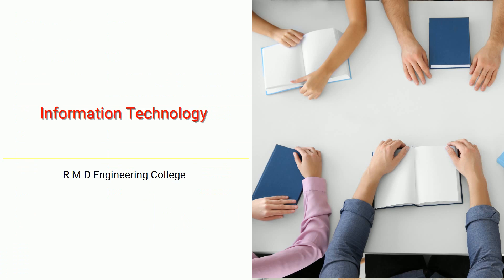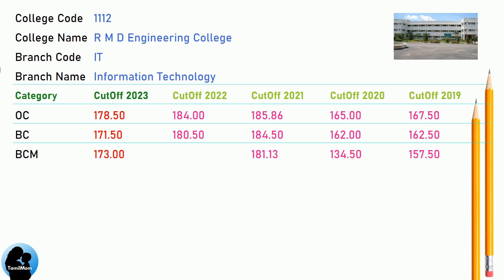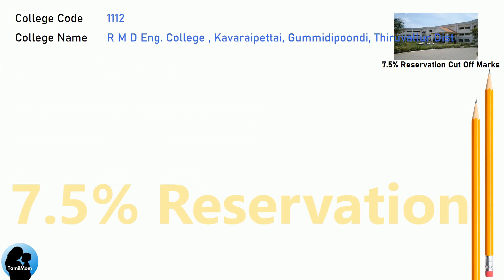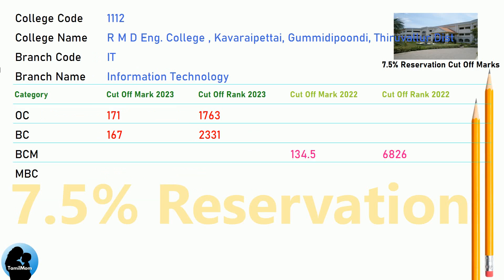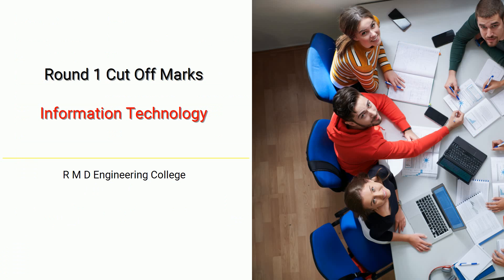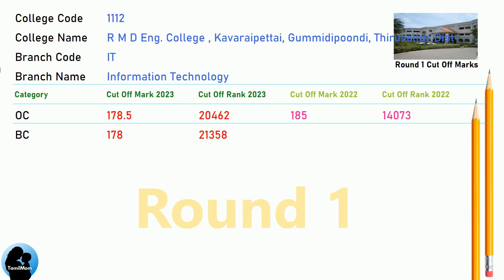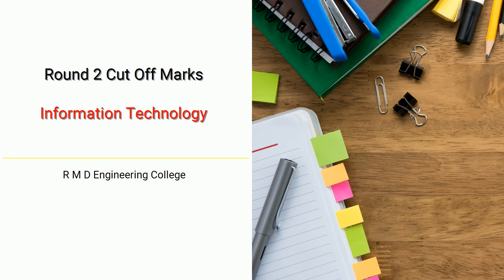DNEA Cut-Off for RMD Engineering College in Information Technology. DNEA 7.5 Reservation Cut-Off for RMD Engineering College in Information Technology. DNEA Round 1 Cut-Off for RMD Engineering College in Information Technology. DNEA Round 2 Cut-Off for RMD Engineering College in Information Technology.